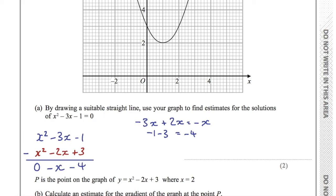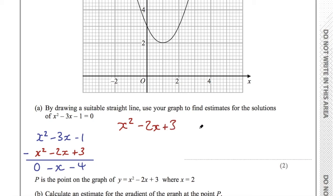So subtracting the first equation from the second, I've found the difference between them. If I take the first equation, x squared minus 2x plus 3, and subtract that difference, I get the second equation, x squared minus 3x minus 1. So I've taken that first equation, subtracted x, subtracted 4, and I end up with x squared minus 3x minus 1.